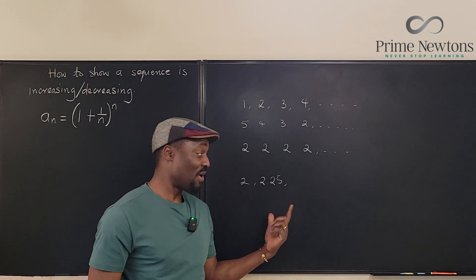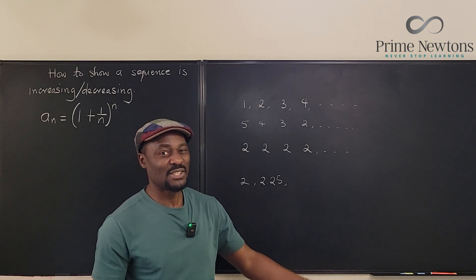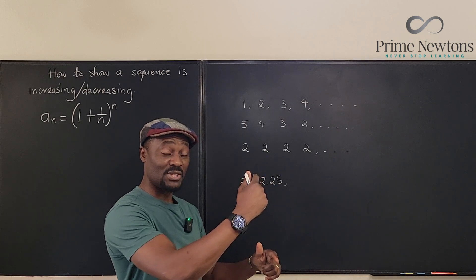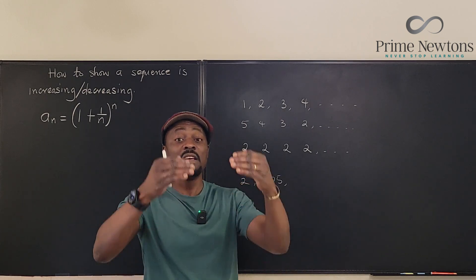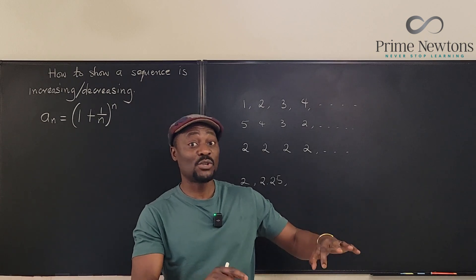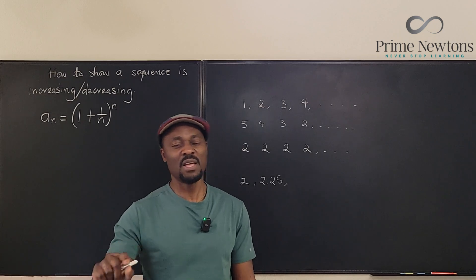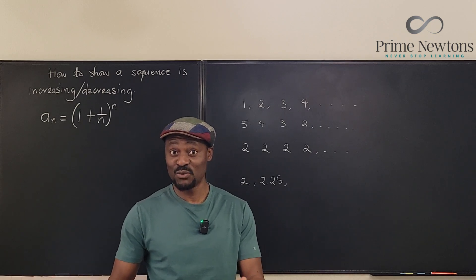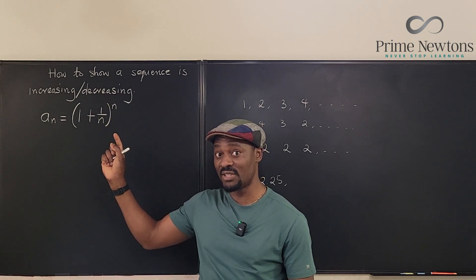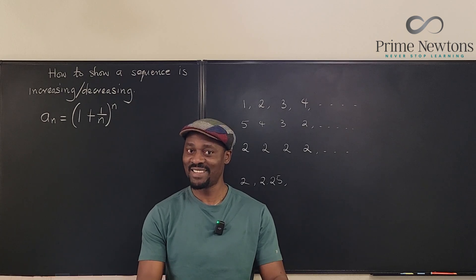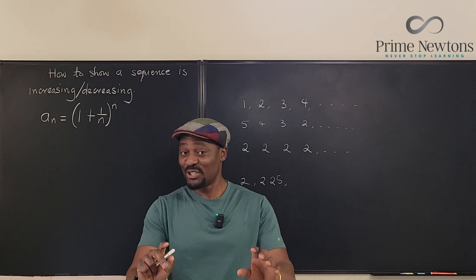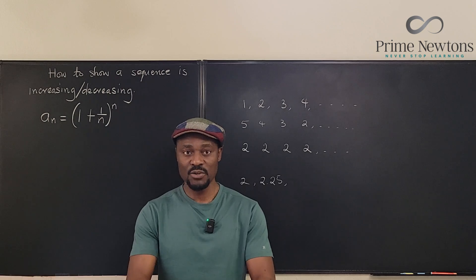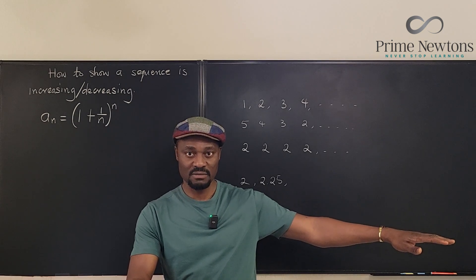A sequence that increases a little and then decreases forever is called an ultimately decreasing sequence; the reverse is an ultimately increasing sequence. Do not verify the monotonic nature of a sequence by plugging in the first few numbers. Similarly, when you take the derivative after converting the sequence to a function, you still have to plug in numbers to check, and even then, how do you guarantee it will always hold?